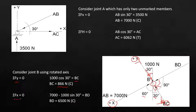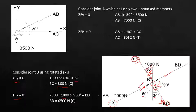Summing forces along x, we have AB which is 7000 newtons in one direction, opposite to BD, and then the 1000-newton force in that direction. Taking the positive direction toward the right, the sine 30 component becomes negative. Therefore BD equals 6500 newtons and is in compression.